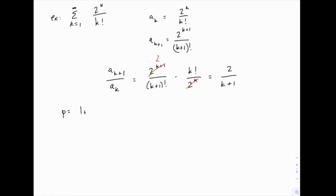So then ρ would be the limit as k approaches infinity of 2 over (k+1), and that again equals 0, which is again less than 1. So this series also converges according to the ratio test.